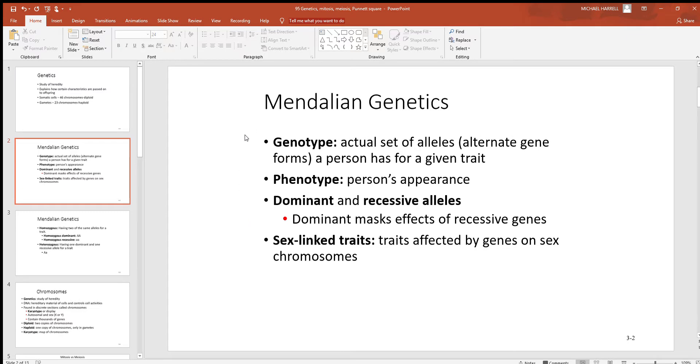Looking at Mendelian genetics, which is named after Gregor Mendel, a monk who got an interest started in all of this. These are some other terms you'll always see used with genetics, like genotype and phenotype. Genotype is the actual set of alleles for a trait. In other words, the forms of the genes for something particular in the body, like maybe eye color. Phenotype is a person's appearance, the outward expression of those genes.